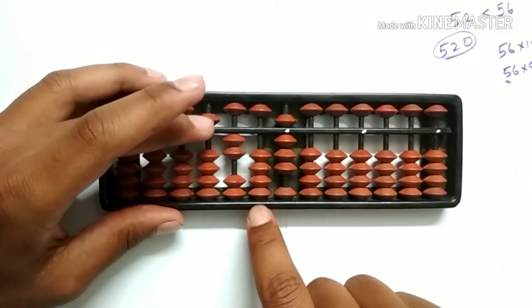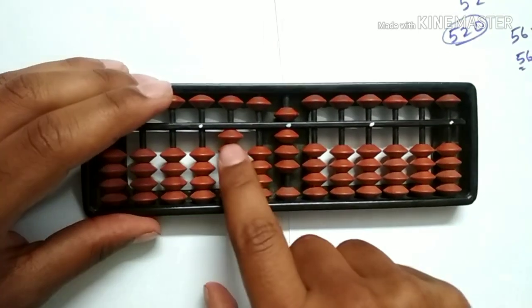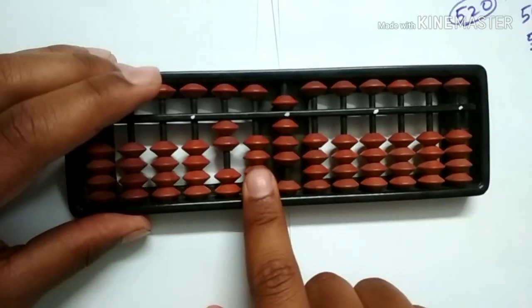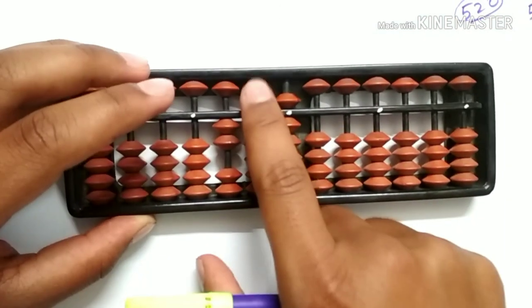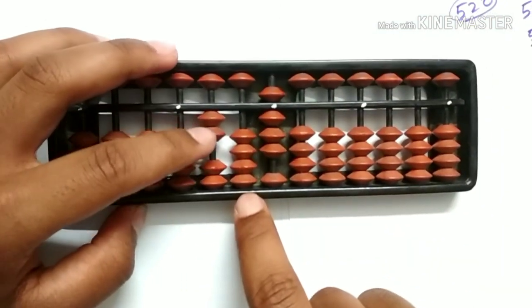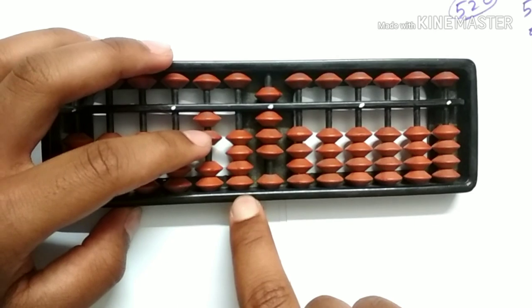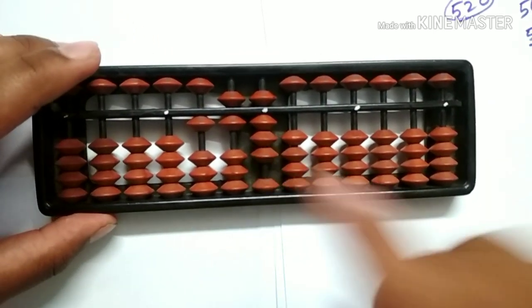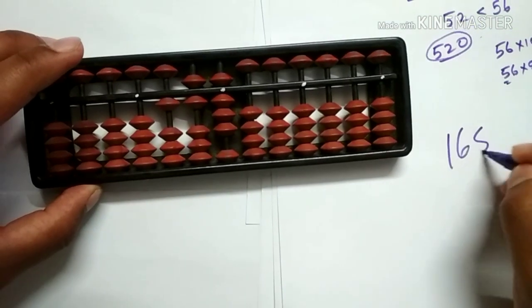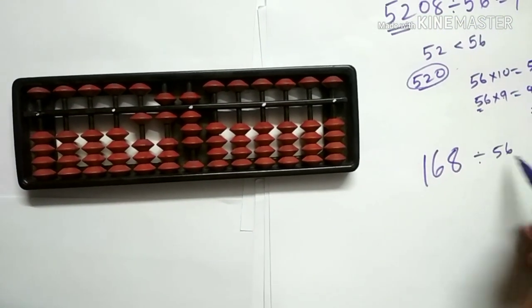Subtract 5 from the 1000th rod, 0 from the 100th rod, and 4 from the 10th rod. To subtract 4 from the 10th rod, we can do big friend subtraction — less the friend 10, add the friend 6. We are left with 168, divided by 56.